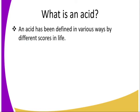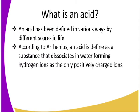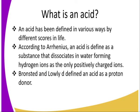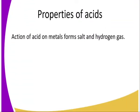There are various definitions of acids. According to Arrhenius, an acid is a substance that dissociates in water forming hydrogen ions as the only positively charged ions. According to Brønsted and Lowry, it is defined as a proton donor. So, what are the properties of acids?